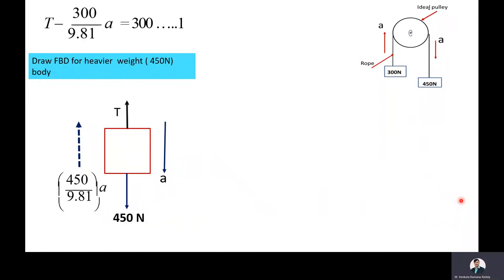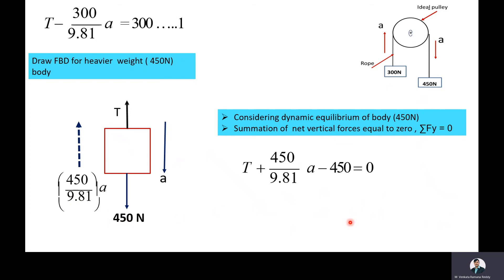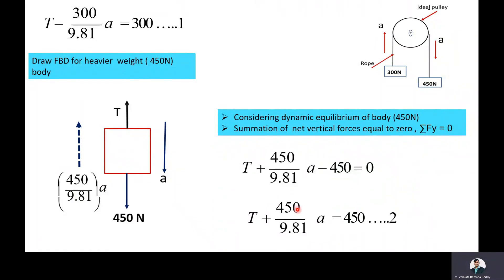Now we consider the dynamic equilibrium condition, and the summation of net vertical forces equals zero (ΣFi = 0). Taking upward forces as positive and downward as negative: T + (450/9.81)·A − 450 = 0. After simplifying, we get T + (450/9.81)·A = 450. This is equation number 2.